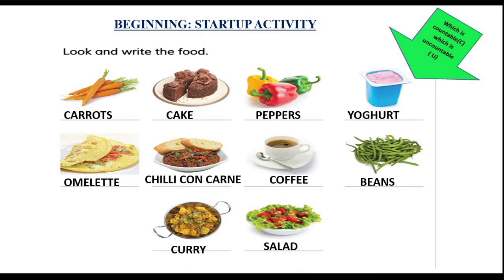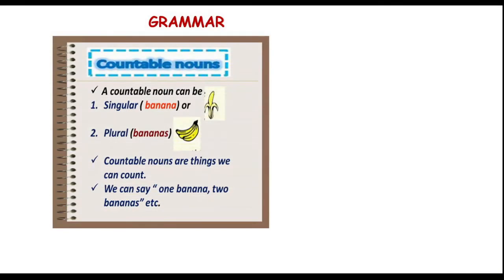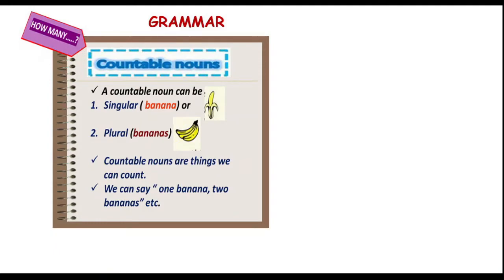Now, which is countable or which is uncountable? Let's have a look at the grammar. Countable nouns are things we can count. We can say, for example, in singular: one banana; in plural: bananas. And we use 'how many' to make questions.